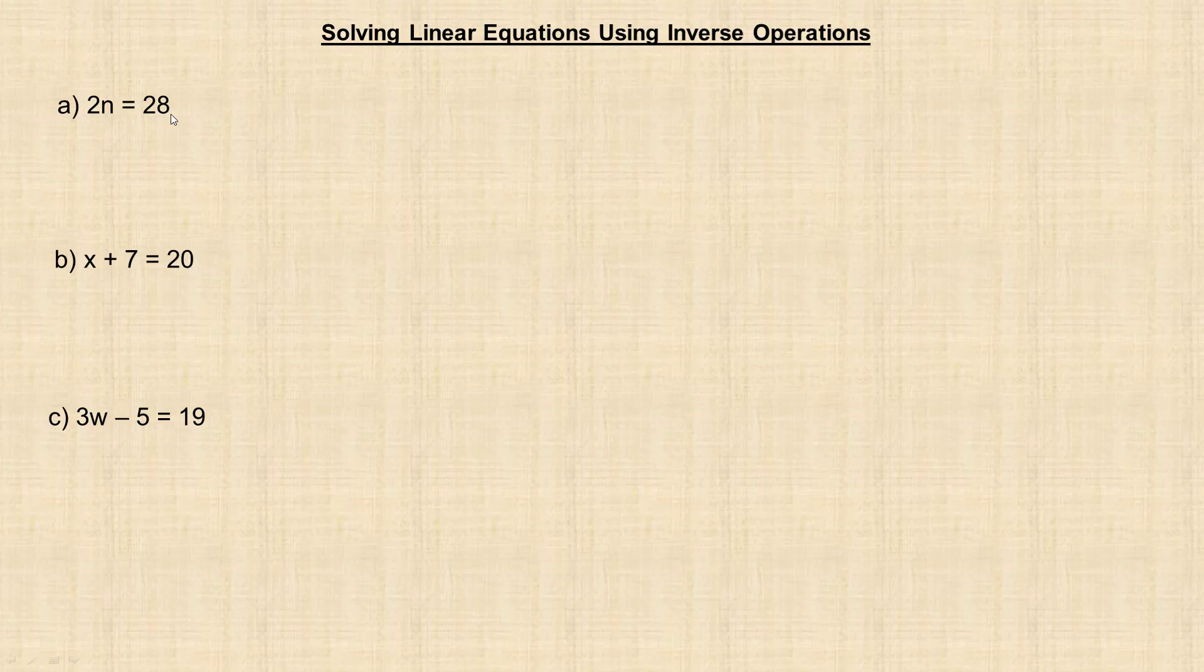I'm going to use flowcharts here to show what the equation means and then how we use the inverse operations. n is our variable, so we start with n. As I already said, 2n means that n is multiplied by 2. So we multiply it by 2, and then we get 28. That's the result. Because that's what the equation says. We have some number n that when we multiply by 2, we get 28.